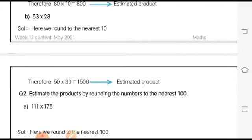Likewise, 53 and 28 - their estimated product is 1500, because 53 is rounded down to 50 and 28 is rounded up to 30, and their product is 1500. That is the estimated product.